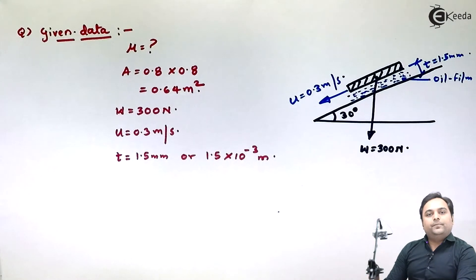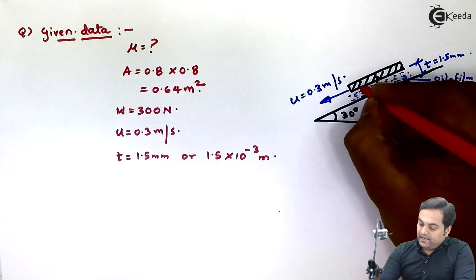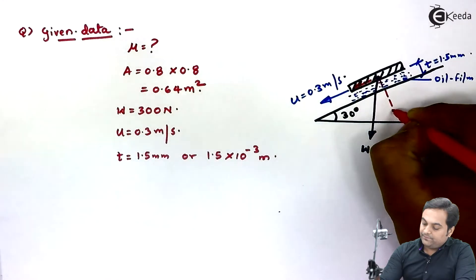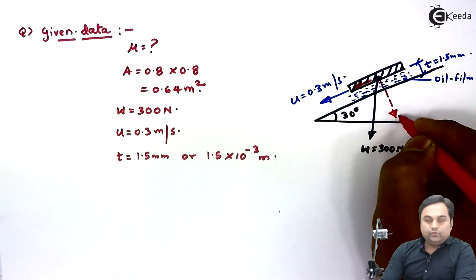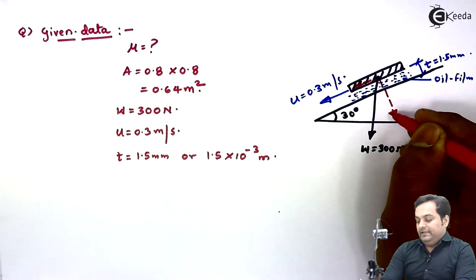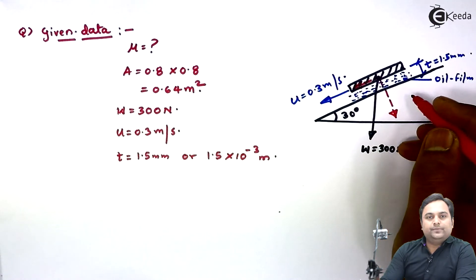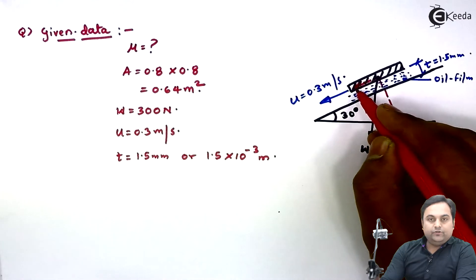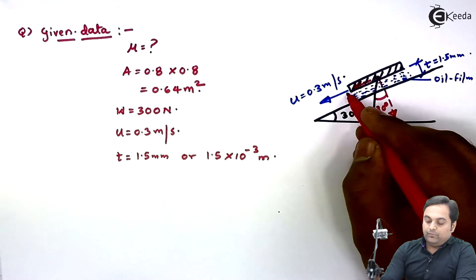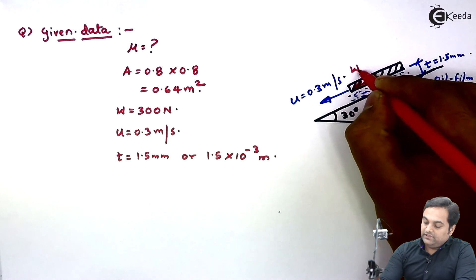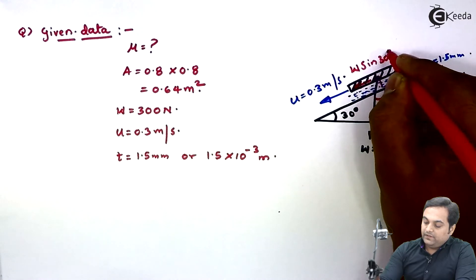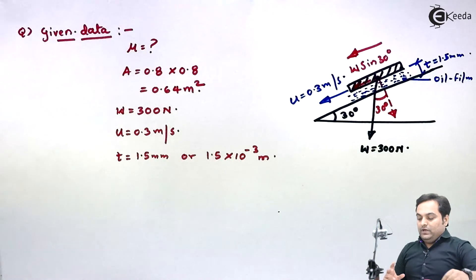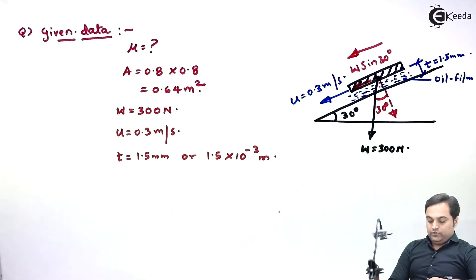Since the weight acts downward on an inclined plane, it has two components: one parallel to the plane and one perpendicular to the plane. The perpendicular component is neglected in this problem. We are only interested in the component of weight parallel to the plane, which is W sin 30°.